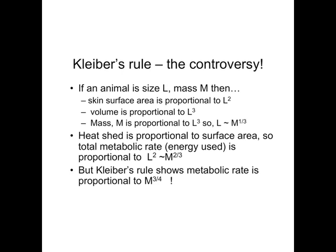The main way we use energy is related to heat loss. Heat loss is proportional to surface area, so metabolic rate should be proportional to surface area, which is proportional to L squared. Since L is M to the one-third, L squared is M to the two-thirds. So following this math with our spherical animal, I'm predicting that metabolic rate scales as M to the two-thirds. But Kleiber's rule gives M to the three-quarters — that's the controversy.